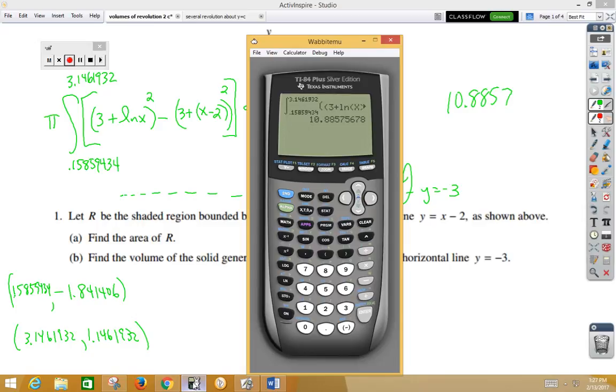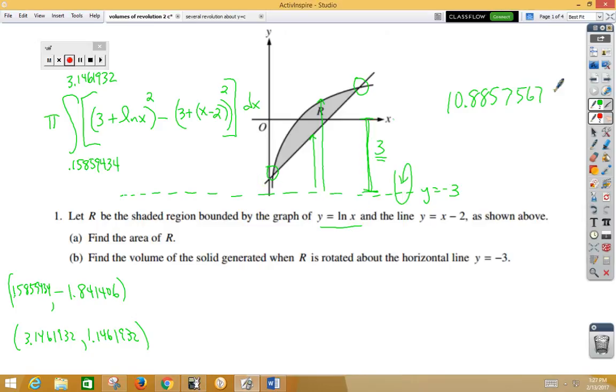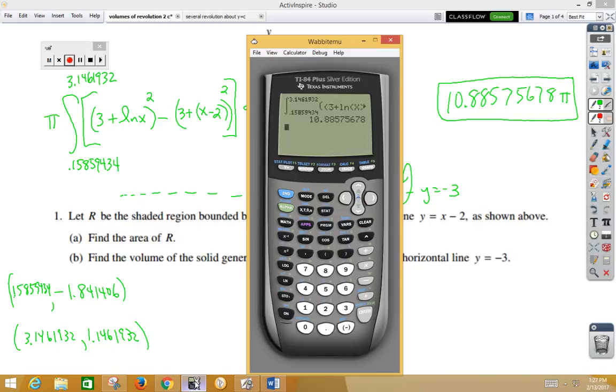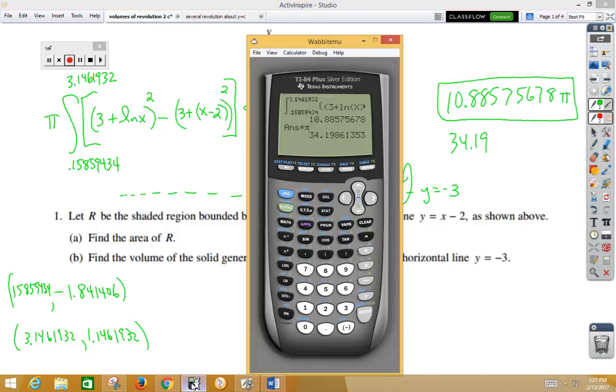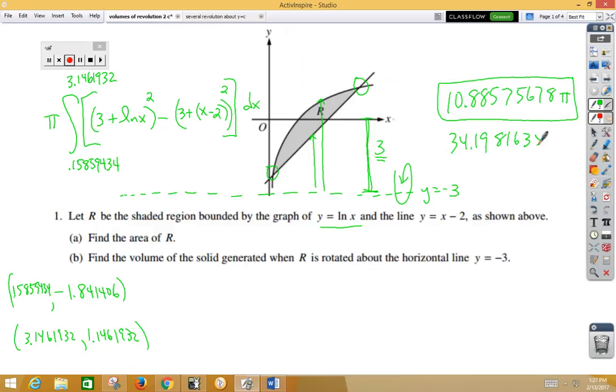10.88575678. That's usually enough, but I'm just going to go ahead and put the whole thing. Now you can leave it in terms of pi, or you could go ahead and multiply your answer by pi. Times pi, and that would give you 34.19861353.